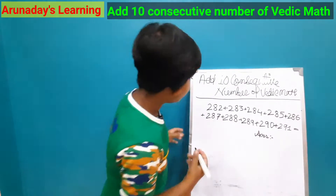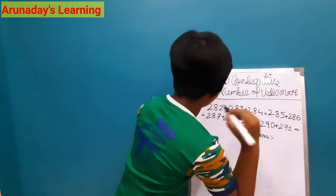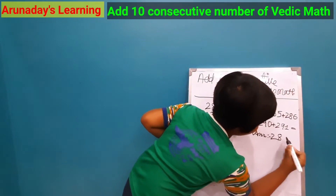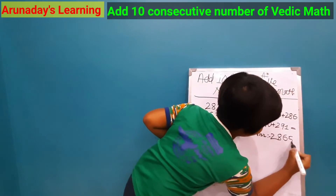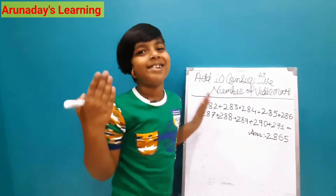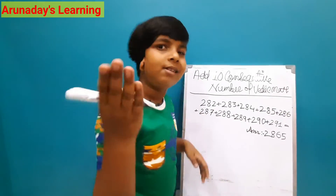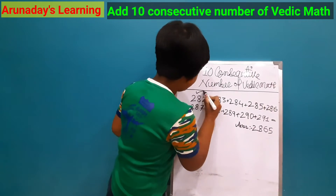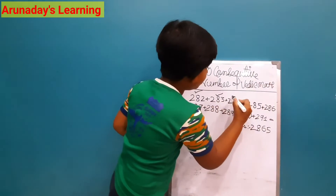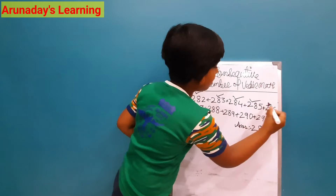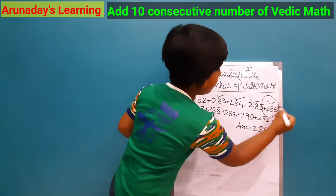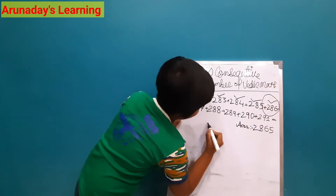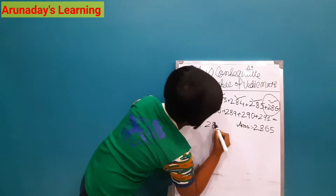Same process. This place will be our answer. We count 1, 2, 3, 4, 5 from the starting number. This place we get 2, 8, 6. So we write the answer as 2, 8, 6, 5.